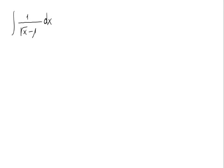Let's calculate the integral we see on the screen. We have an integral of a fraction in which the denominator contains a square root. We can easily check that this integral cannot be done immediately. The main problem is the square root in the denominator — how can we get rid of it?